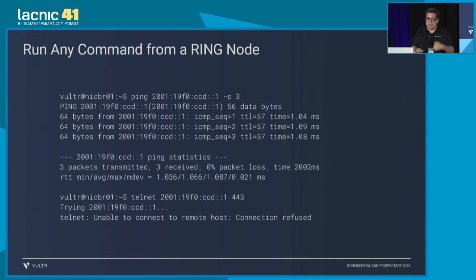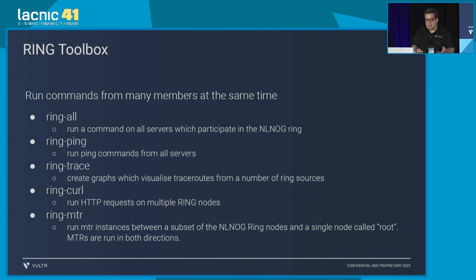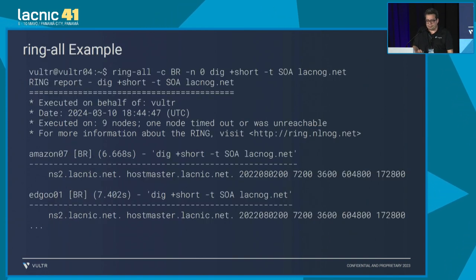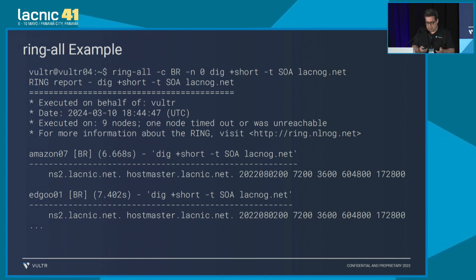There are also bulk commands. You can enter commands one by one, but there are commands that work with several machines at the same time. For instance, ring ping — I say 'ring ping my IP number' and it will choose by default 10 servers randomly, and they'll each send a ping. Ring all — I give a command from all the virtual machines I wish. For instance, I'm doing a dig of LACNIC.NET from all nodes available in Brazil.